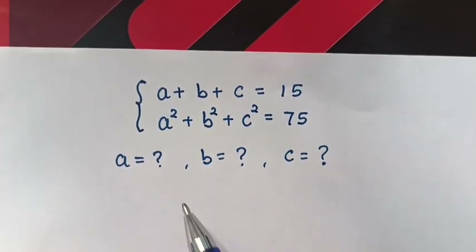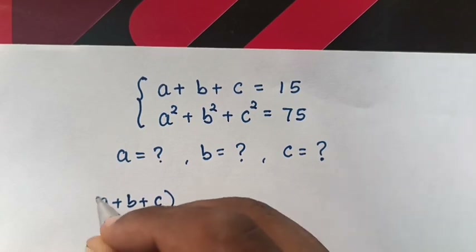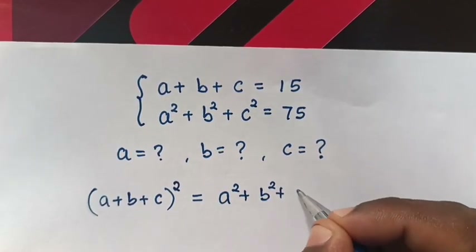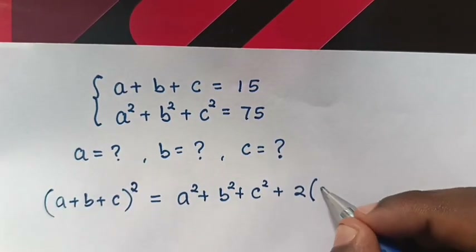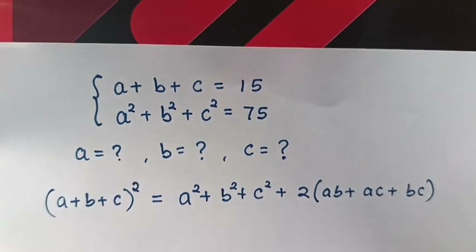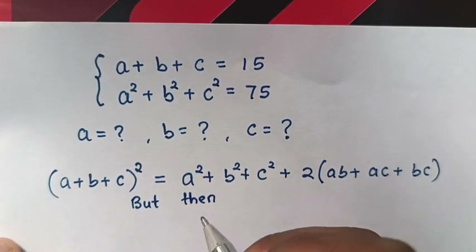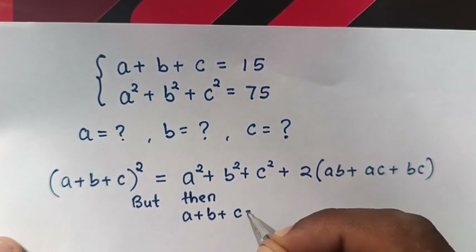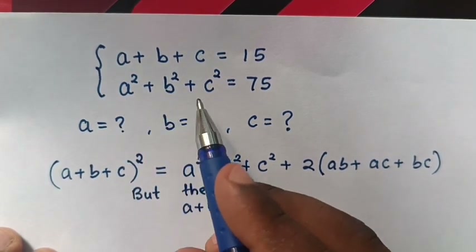From a plus b plus c, we square both sides. This is equals to a squared plus b squared plus c squared plus two bracket ab plus ac plus bc. Then a plus b plus c is equals to 15, so we substitute the value of 15 into our equation.